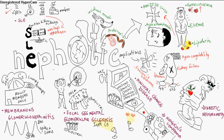Here we have a picture of nephrotic syndrome, and the O, because it's nephrotic, represents the increased capillary wall permeability.